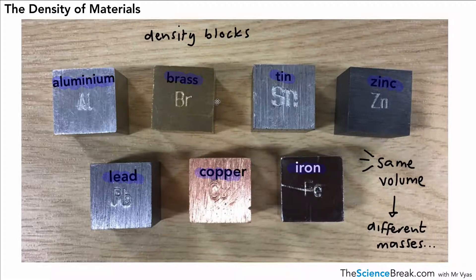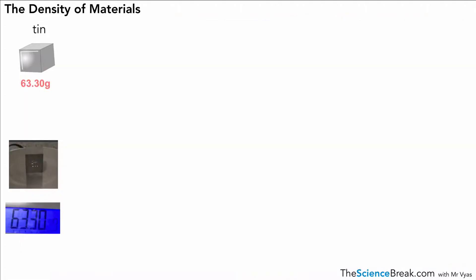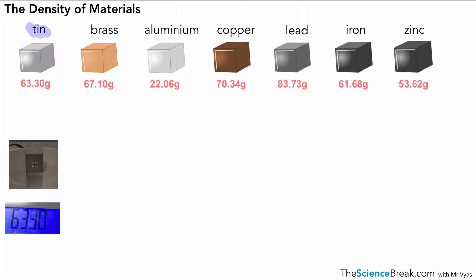I've done that for the first one over here. First one is tin, put on the measuring scale on the balance, and we saw that it has a mass of 63.3 grams. We can do that with the rest of them as well, and you can see that even though the volume of each of those blocks is exactly the same, the masses are different.